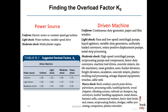The overload factor K_O is found from Table 9-1. It depends on the power source — uniform, light shock, or moderate shock — and on the driven machine type — uniform, light shock, moderate, or heavy shock. You identify your power source (electric motor, gas turbine, or multi-cylinder engine) and match your driven machine to the table definitions to find K_O.